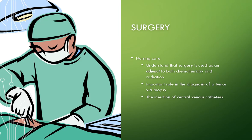Surgery plays an important role in diagnosis of tumors via biopsy — getting tissue out to look at under the microscope is very important. Central venous catheters are often inserted during surgery; a Groshong catheter, for example, would definitely have to be done in surgery, not in x-ray.